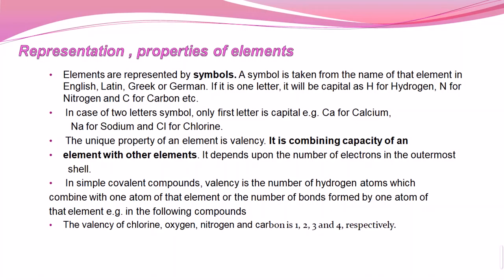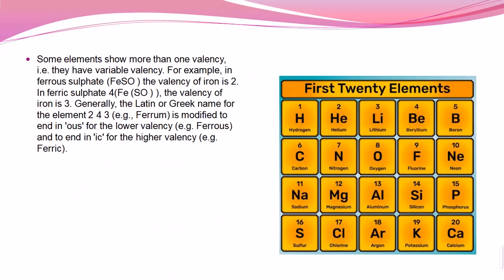For example: chlorine has 7 electrons in its outermost shell and needs only 1 more; oxygen has 6 and needs 2; nitrogen has 5 unpaired electrons and needs 3 to complete its octet — so it gains three electrons like three hydrogen atoms to become stable. Carbon has a unique valency of four, which makes it form graphite, diamond, and crystal structures.